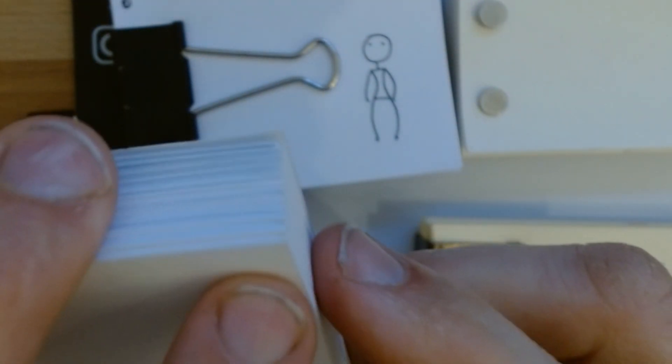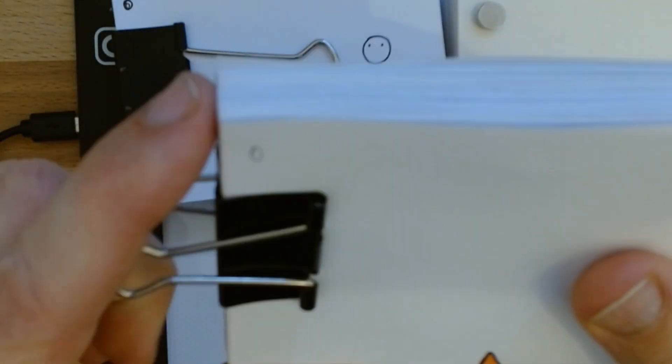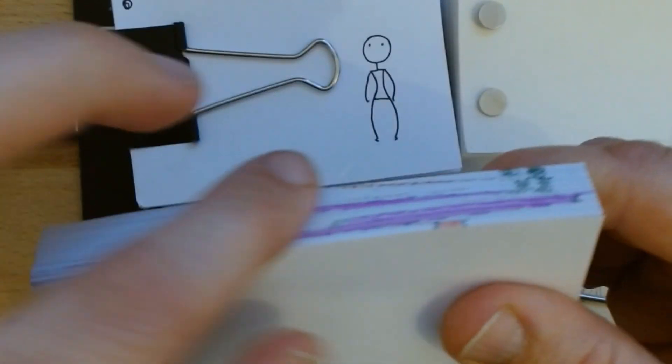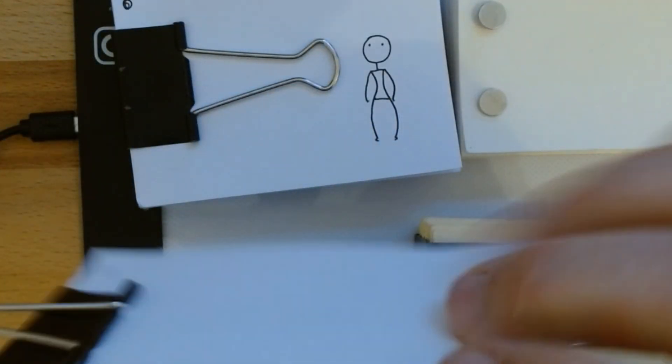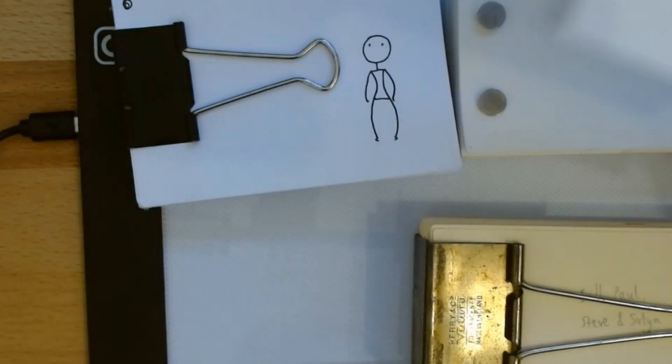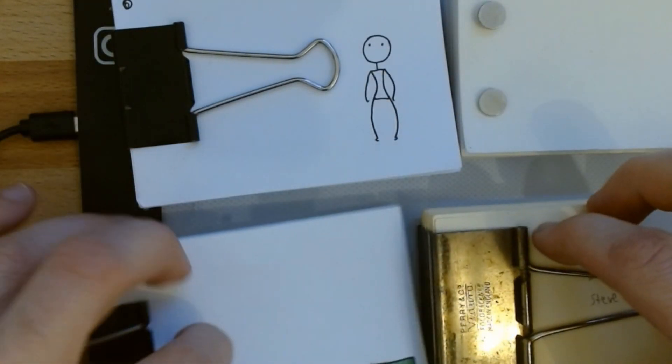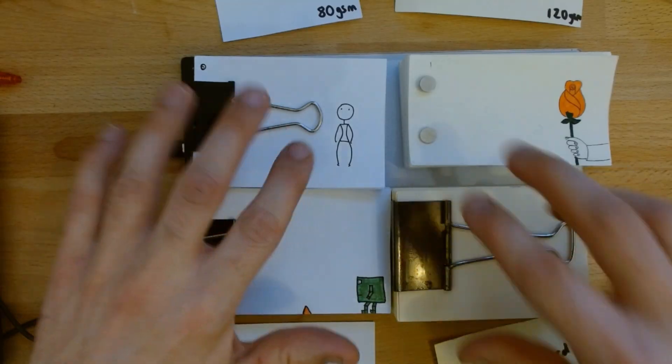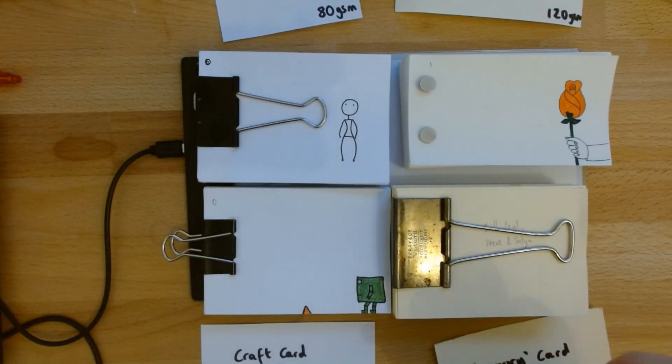But that doesn't matter because this edge here is perfect, that's perfect, and then the edge along the bottom is perfect. So I've got three perfect edges there, which means that it flips nicely, which gives it an advantage over these two, which I've cut from A4 paper.